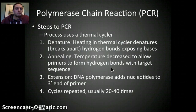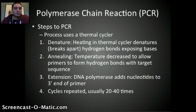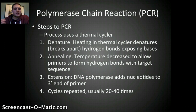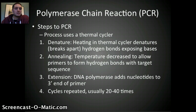The steps to PCR are three main steps. We use a machine called a thermal cycler, which can range anywhere from $1,000 to several thousand dollars depending on efficiency and features, though prices have come down since their introduction. The first step is denaturing — heating in the thermal cycler to break apart the hydrogen bonds, thus exposing the nitrogen bases. The second step is annealing, where the temperature decreases to allow primers to form hydrogen bonds with the target sequence, starting to pair new nucleotides with the DNA template strand.